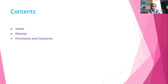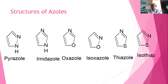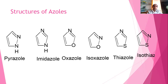The azoles include six types. The first is pyrazole — a 5-membered ring with two nitrogens at adjacent positions. The second is imidazole, where the two nitrogens are at the first and third positions. The difference between pyrazole and imidazole is only the position of nitrogen, which itself makes a difference in the physical and chemical properties.